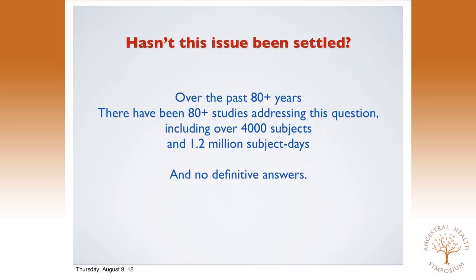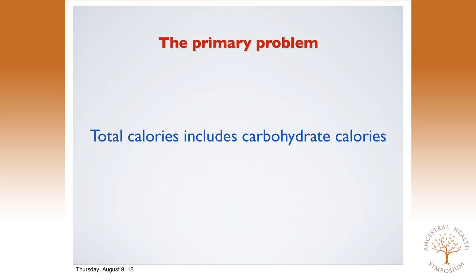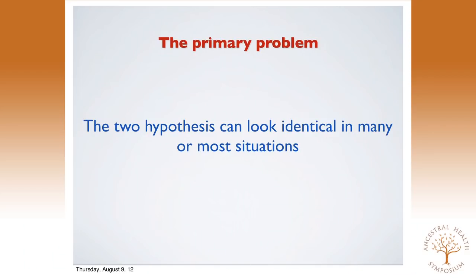Hasn't this issue been settled? We recently did a comprehensive review of the literature going back to 1932 — 80-plus studies including over 4,000 subjects and 1.2 million subject days. I can tell you beyond a shadow of a doubt: there are no definitive answers. The primary problem with virtually all these studies is that total calories include carbohydrate calories — carbs represent about 50 to 55% of calories. If somebody does a study where they restrict intake and lower calories, they lower carbohydrates as well, and they change insulin signaling. Under these circumstances, the two paradigms can look identical.